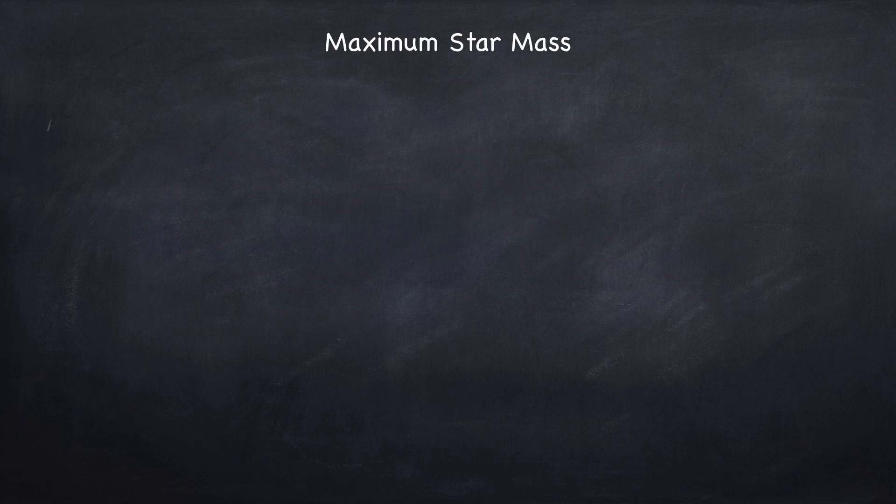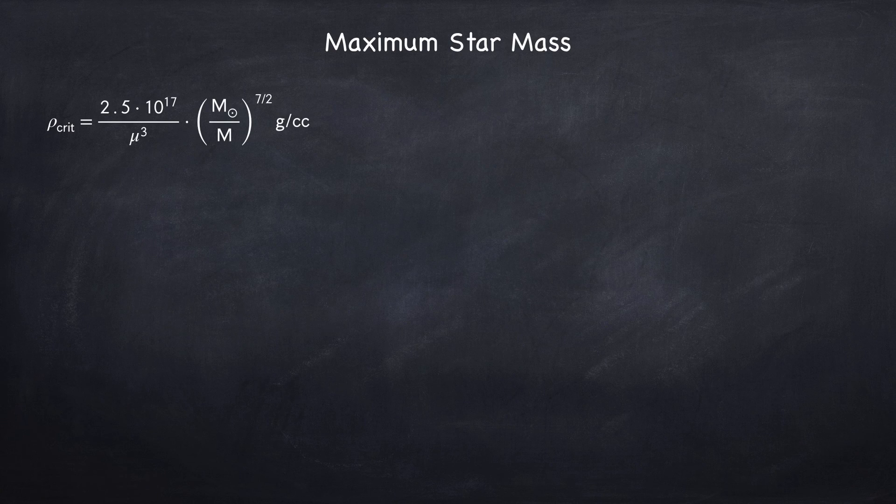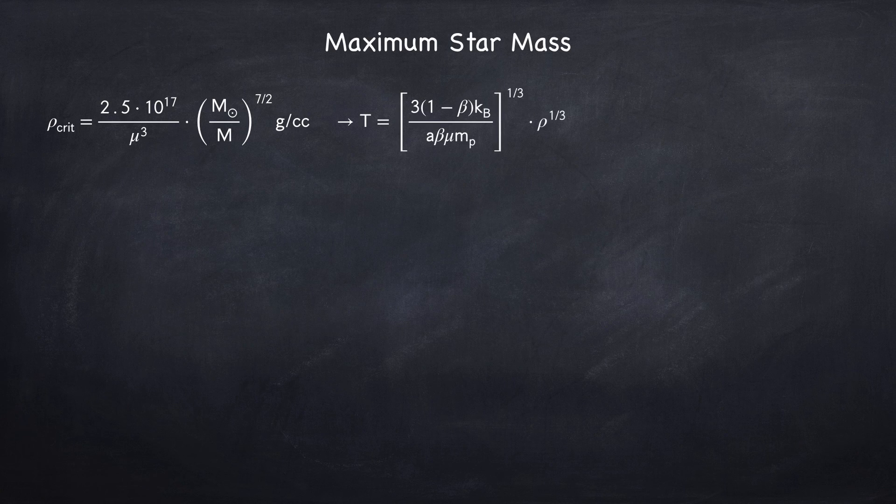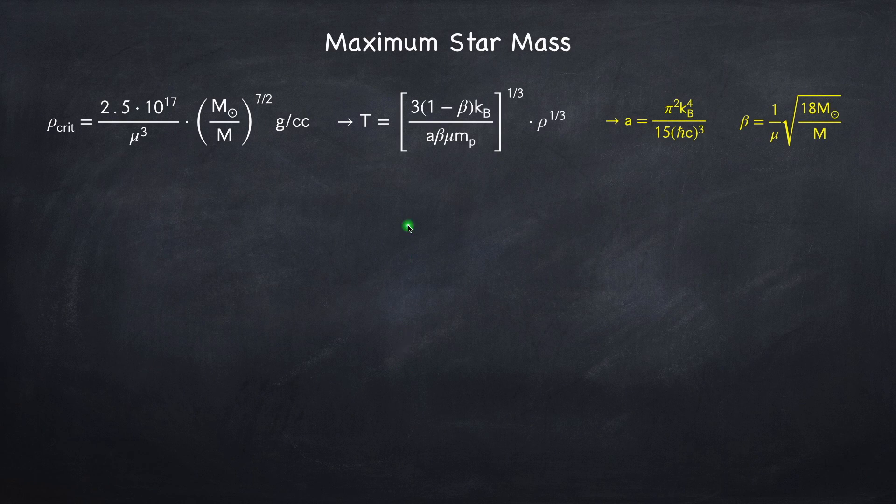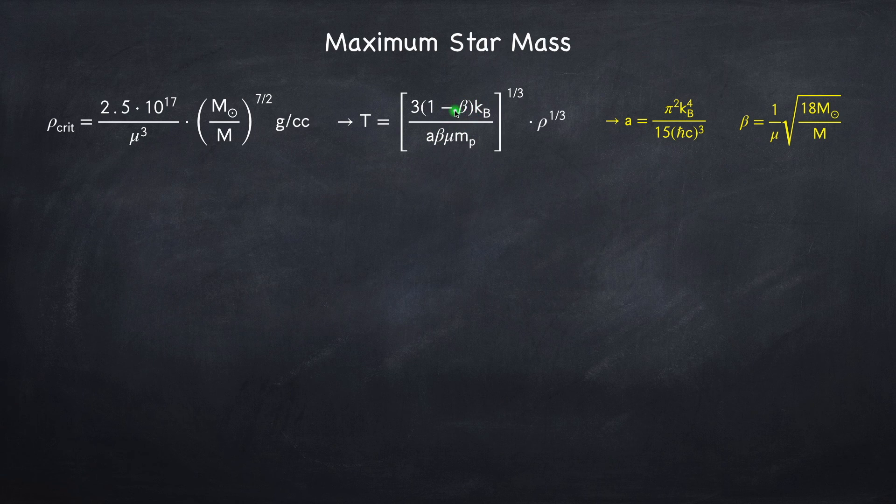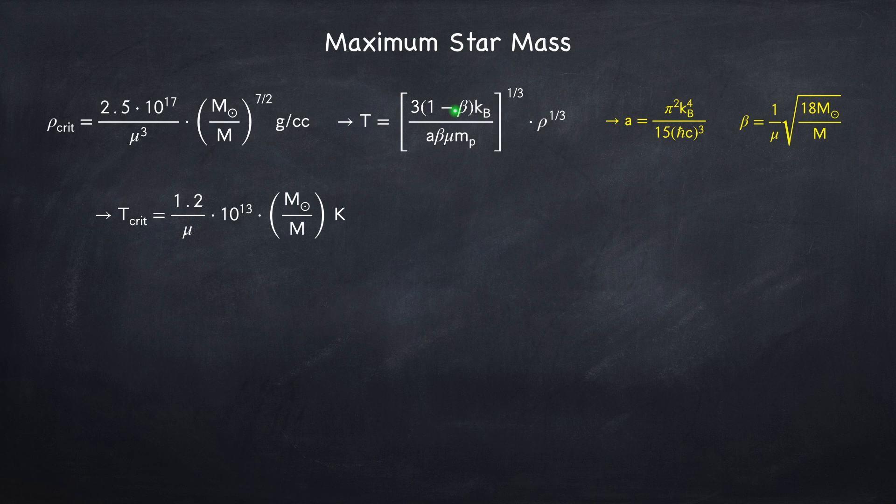We now have everything we need to find the maximum mass of a star. In my video on polytropes, Stellar Physics 3b, we found a relationship between the temperature and the density. Again, we can plug in our expression for beta into here and ignore this one because 1 minus beta is going to be basically 1. And then set the central density to the critical density to find the critical temperature. So this is the central temperature when the star goes unstable.